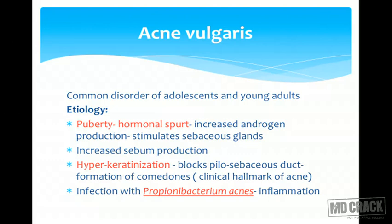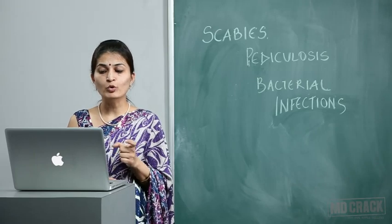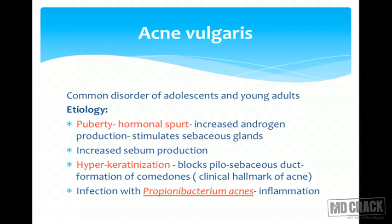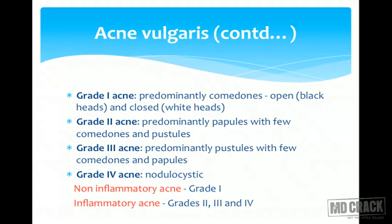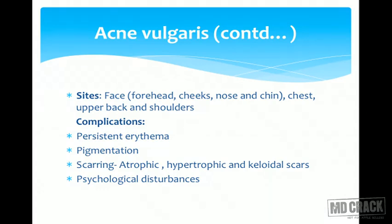Once comedones get infected with Propionibacterium acnes, which is present on the face, inflammation results. The grades of acne are: grade 1 — predominantly comedones, also called the non-inflammatory stage; grade 2 — predominantly papules; grade 3 — predominantly pustules with a few nodules; grade 4 — severe nodulocystic acne. The sites are basically the sebaceous areas of the body — on the face: forehead, cheeks, nose and chin; also the chest, upper back and shoulders.